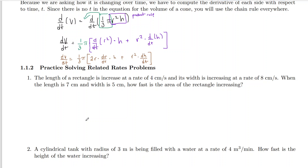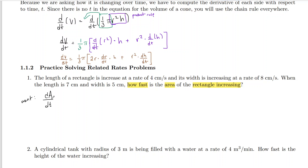The first example says: the length of a rectangle is increasing at a rate of 4 centimeters per second, and its width is increasing at a rate of 8 centimeters per second. When the length is 7 centimeters and the width is 5 centimeters, how fast is the area of the rectangle increasing? The problem is asking for the area's rate of change, so we want dA/dt.